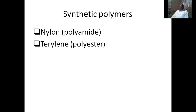Today we will look at non-natural polymers, which are known as synthetic polymers. We make them in the industry or in the lab, so they are not natural. Nylon is a polyamide because it has the amide linkage, which is also found in proteins, while Telerin is actually a polyester because it has an ester linkage, which is found in fats.